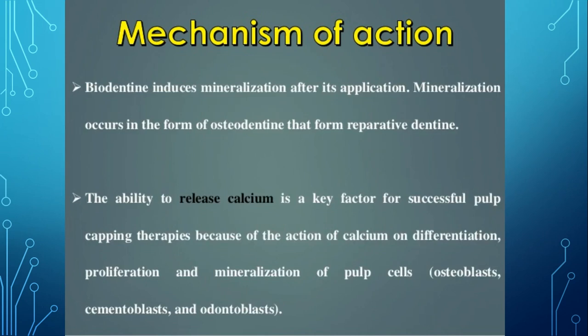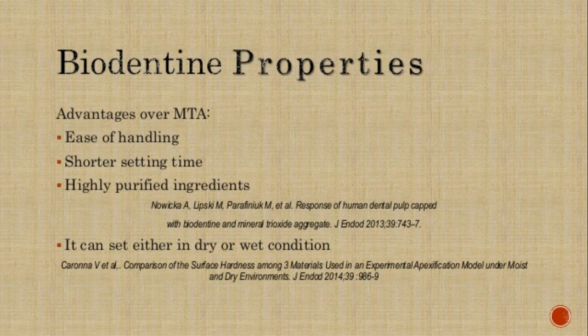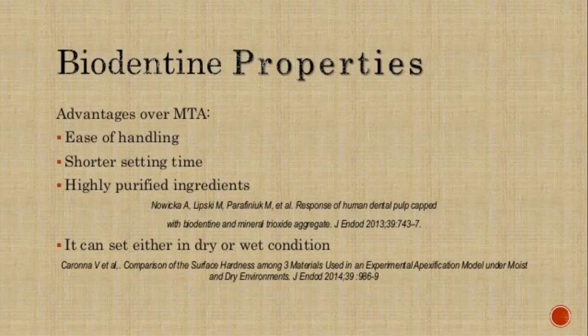Mechanism of action of biodentine: it induces mineralization after application. Mineralization occurs as osteodentine forming reparative dentine. The ability to release calcium is a key factor for successful pulp capping therapies because of calcium's action on differentiation, proliferation, and mineralization of pulp cells — osteoblasts, cementoblasts, and odontoblasts. Properties of biodentine are similar to MTA but with advantages: ease of handling, shorter setting time, highly purified ingredients, and it can set in either dry or wet conditions.